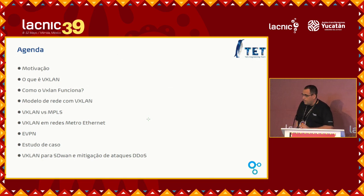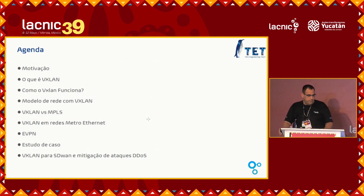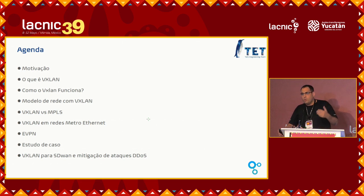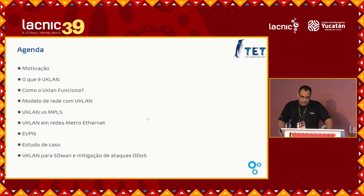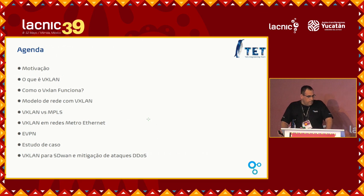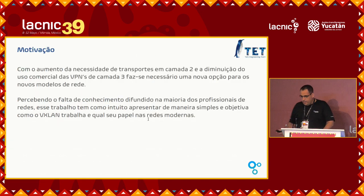This is our agenda — the outline of my presentation. First of all, what is VXLAN and how it works? The network model with VXLAN and VXLAN versus MPLS — many people compare these two technologies. VXLAN in Metro Ethernet networks, how to replace this, and Pure Layer 2 for VXLAN. VXLAN EVPN case study, and VXLAN for SD-WAN and mitigation of DDoS attacks.